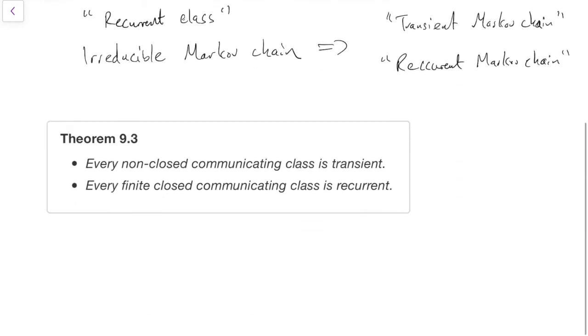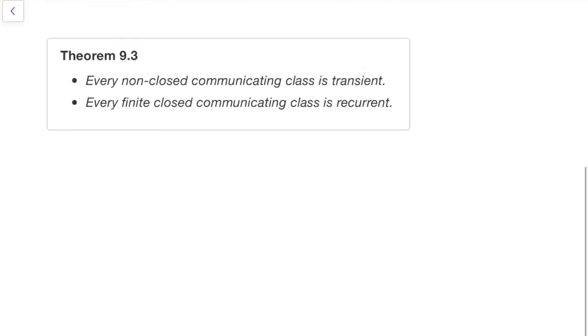There's a second theorem here, which will make life much easier for us when we're trying to tell whether things are transient or recurrent. Every non-closed communicating class is transient. Remember, non-closed means you can get out of the class.